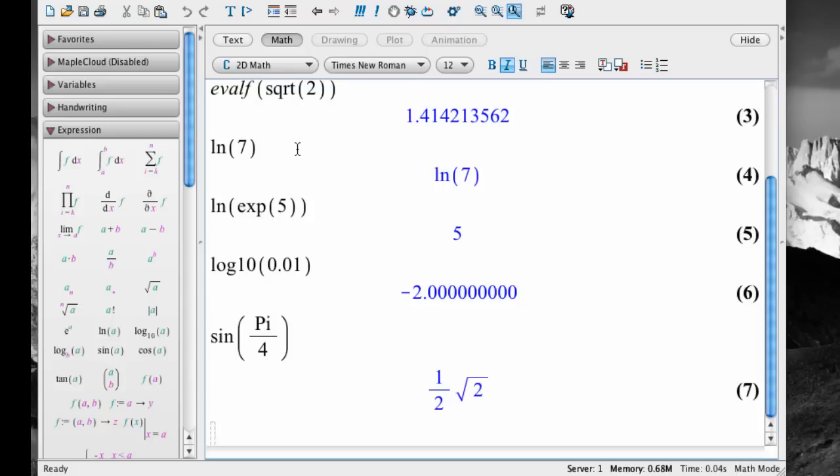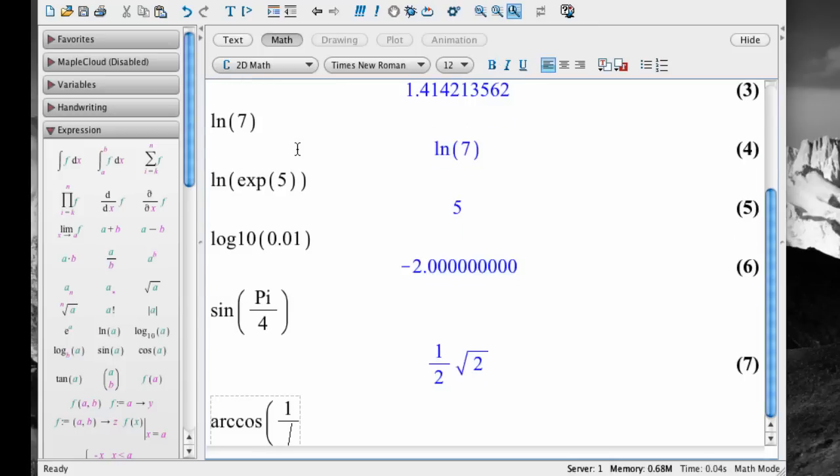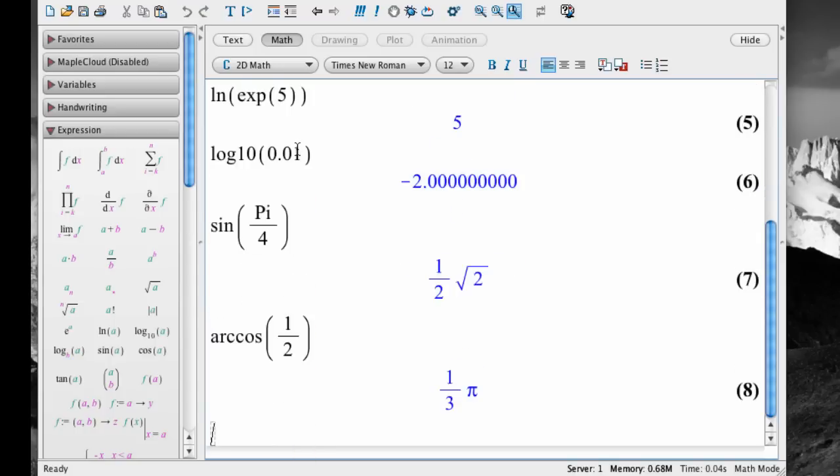For inverse trig functions, we use the arc notation rather than a negative 1 exponent. For example, to find the inverse cosine of 1 half, type arccos, open parenthesis, 1, slash 2, navigate out of the denominator with the right arrow key, and then close parenthesis and hit enter.